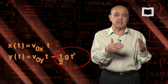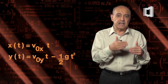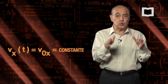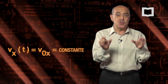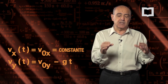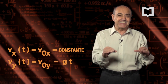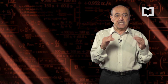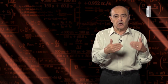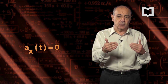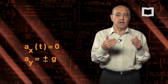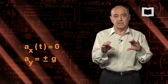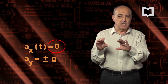Las componentes de la velocidad en X y en Y corresponden análogamente: la componente X es la de un movimiento rectilíneo uniforme, es decir, no depende del tiempo y es constante, mientras que la componente Y de la velocidad depende linealmente de la aceleración de la gravedad. Las componentes de la aceleración son: componente X estrictamente cero, y componente Y igual a 10 metros sobre segundo cuadrado.